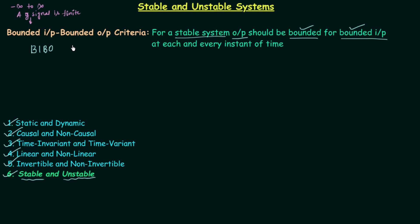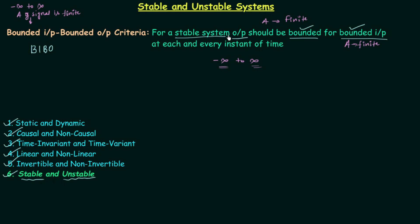The same thing goes for the bounded output: from minus infinity to infinity, the amplitude of the output signal is finite. For a stable system, the output should be bounded for bounded input at each and every instant of time, meaning from minus infinity to infinity. At each and every instant of time, the amplitude of the output should be finite when you provide an input signal having finite amplitude from minus infinity to infinity. So both input and output should have finite amplitude, and if this is satisfied, the system is a stable system.